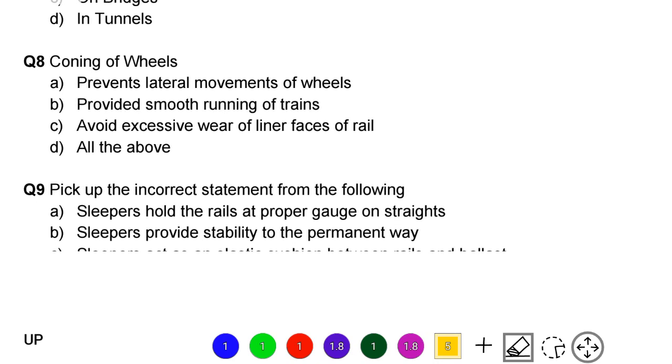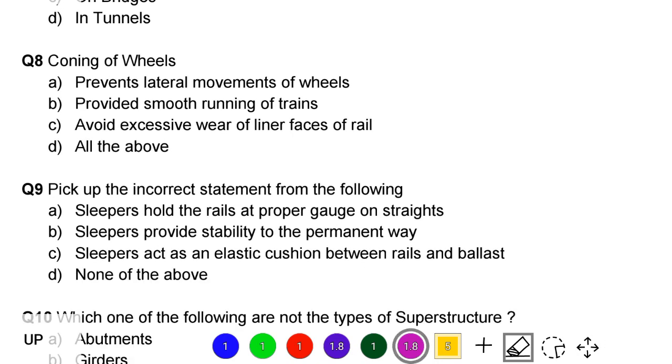Next question: coning of wheels. Option A: prevents lateral movement of wheels. Option B: provides smooth running of trains. Option C: avoid excessive wear of inner faces of rail. Option D: all the above. The correct answer is option D, all the above.